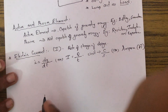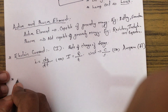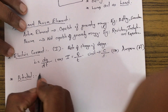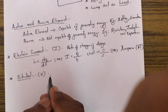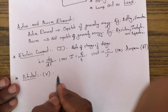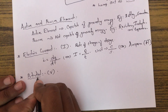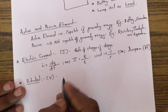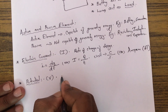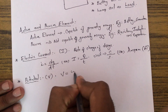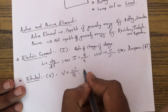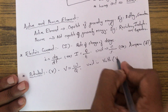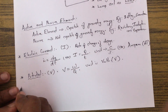Next is potential, represented by V. It is the work done to move a unit positive charge from infinity to that particular point. So V = W/Q, and its unit is volts, represented by capital V.